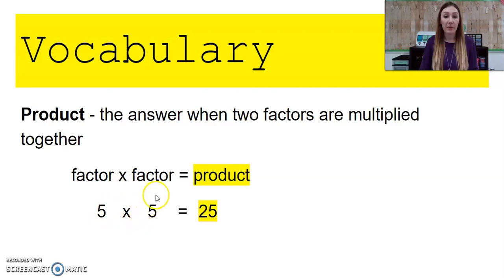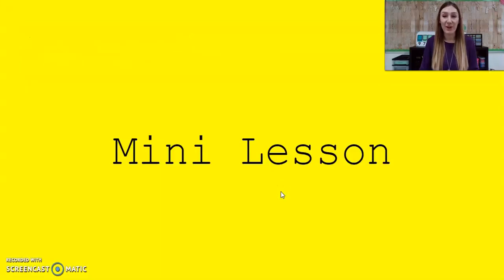So when I multiply this 5 times 5, my answer is 25, so 25 we would call that our product. Alright, now for our mini lesson.